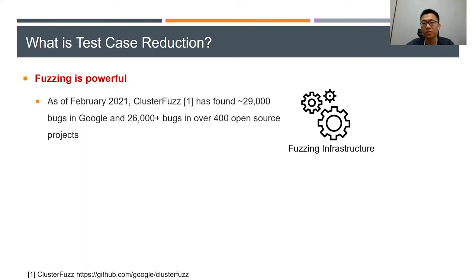Nowadays, fuzzing techniques have been very powerful. In February of 2021, the well-known fuzzing infrastructure ClusterFuzz has found about 29,000 bugs in Google's products and more than 26,000 bugs in over 400 open-source projects.